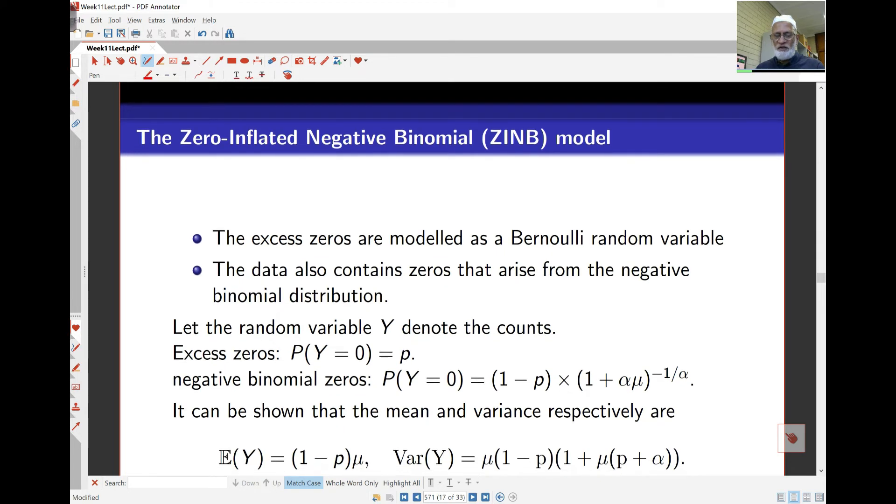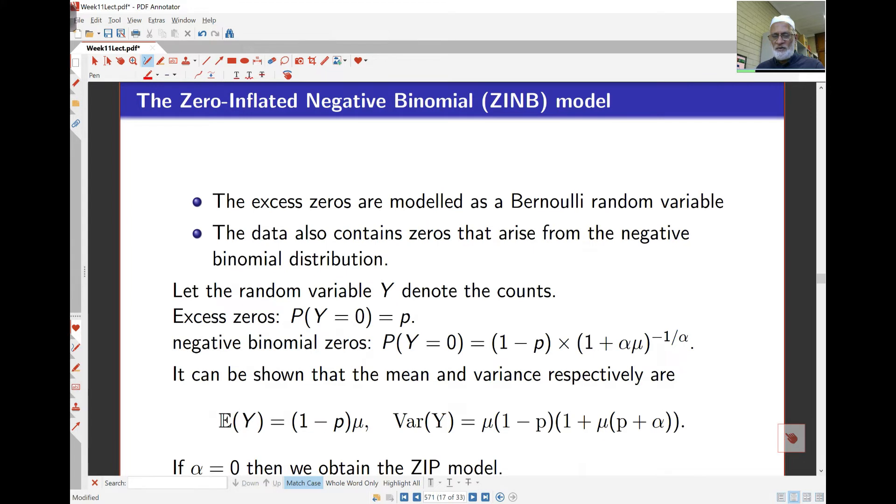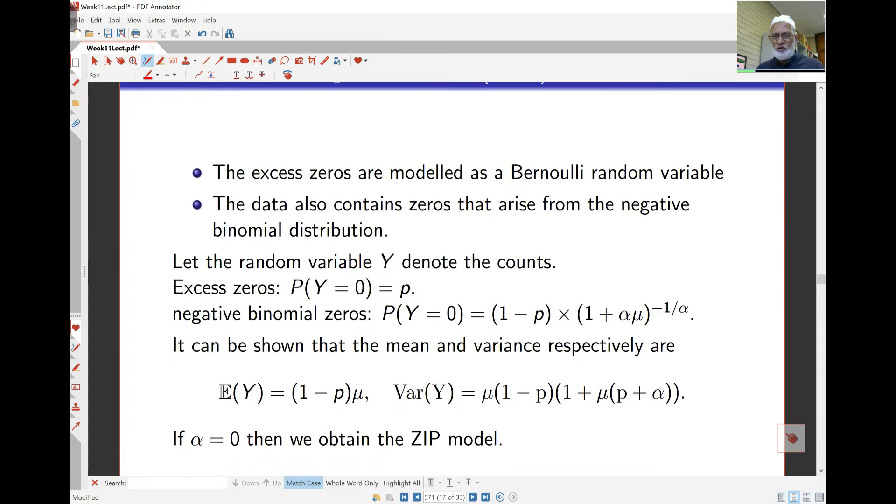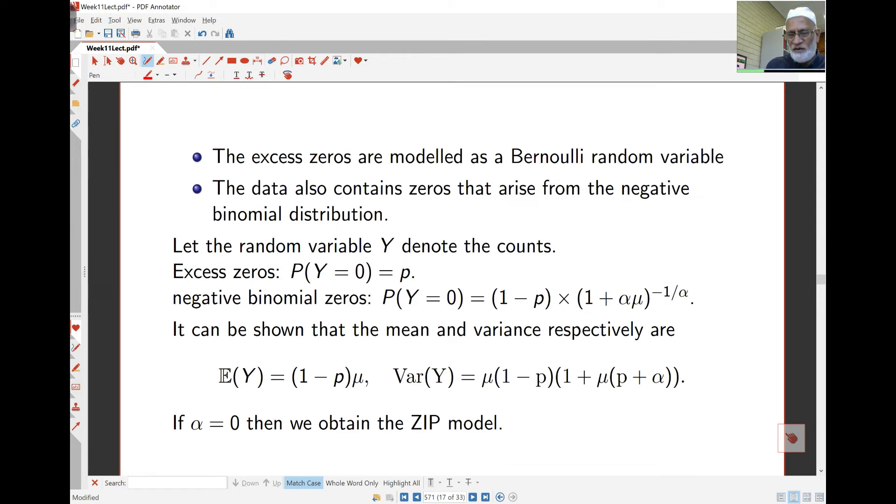Now, how about the zero-inflated negative binomial model here? In this case, the excess zeros are modeled as the Bernoulli or binomial as before. But now, the non-zero counts come from a negative binomial distribution. The probability model here is similar. We still have this mixture model idea. The mean here is 1 minus p times mu and the variance here is mu 1 minus p and 1 plus mu times p plus alpha, where this alpha is the parameter of the negative binomial distribution. If I put alpha equals 0, then you can see it reduces just to the zero-inflated Poisson model.